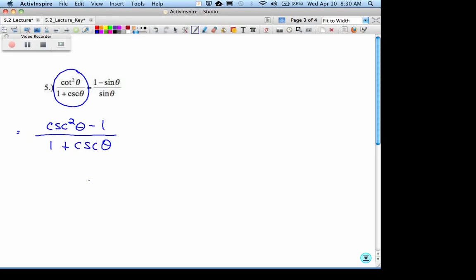I could try a conjugate. I could also try factoring the numerator. Oh, I cannot cross out the 1s. I see that a lot. Because this is, if you want to cross off that negative 1 with this one down here, you have to understand that this is 1 plus cosecant.